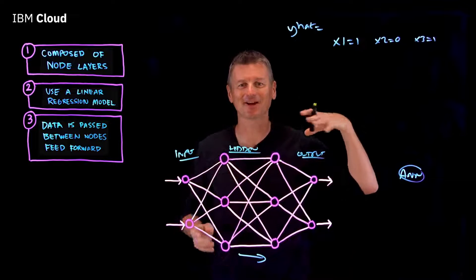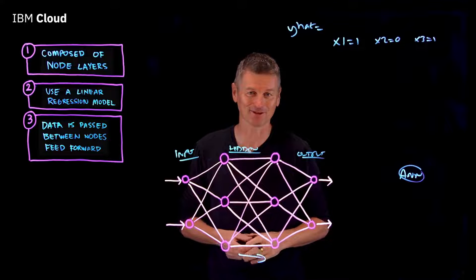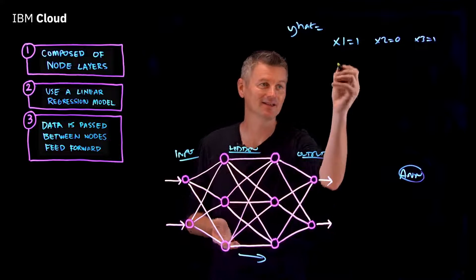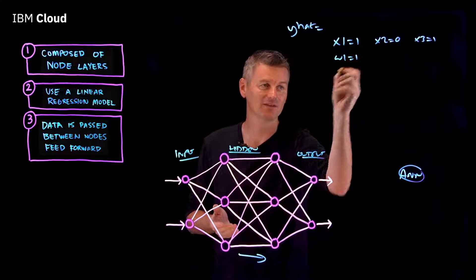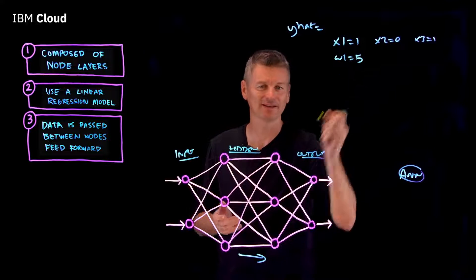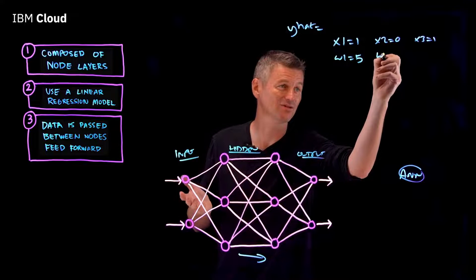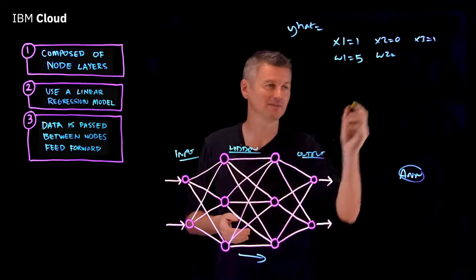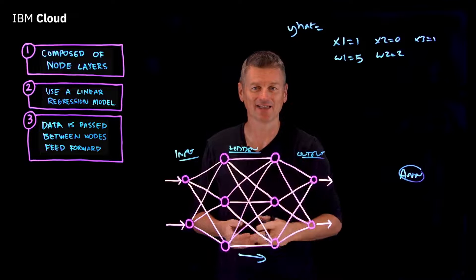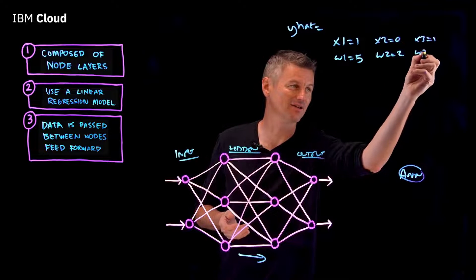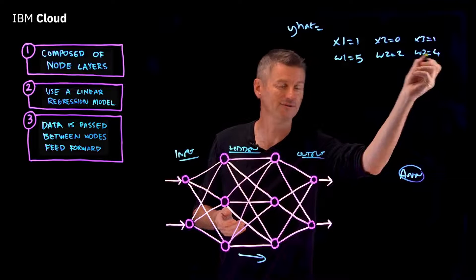Now, to each decision, we assign a weight based on its importance on a scale of zero to five. Let's say that the waves - this is important - let's give it a five. And for the crowds, that's w2, not so important, we'll give that a two. And sharks, we'll give that a score of four.